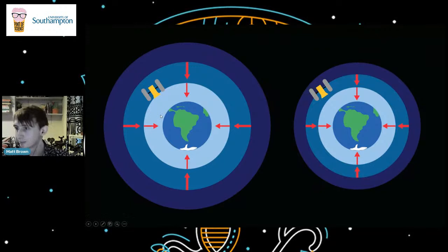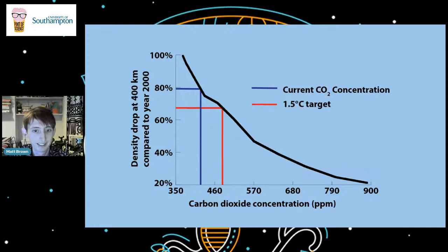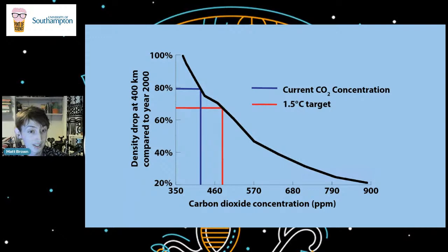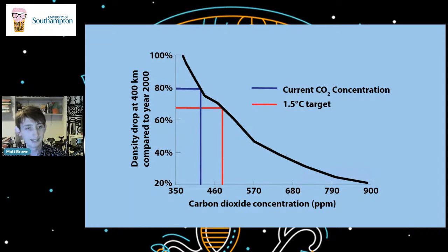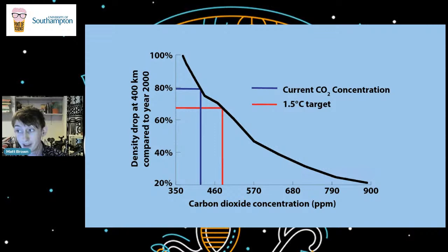We've modeled this. We increased the CO₂ concentration at ground level from 360–370 parts per million — what it was in the year 2000 — up to over double that, to 890 ppm. The y-axis shows the density drop at 400 kilometers (space station altitude) compared to the year 1000. At our current CO₂ level of about 440 ppm, we already have a 21% drop in atmospheric density at the space station's altitude. If we meet the 1.5°C Paris Agreement target, that will be limited to around 30%.